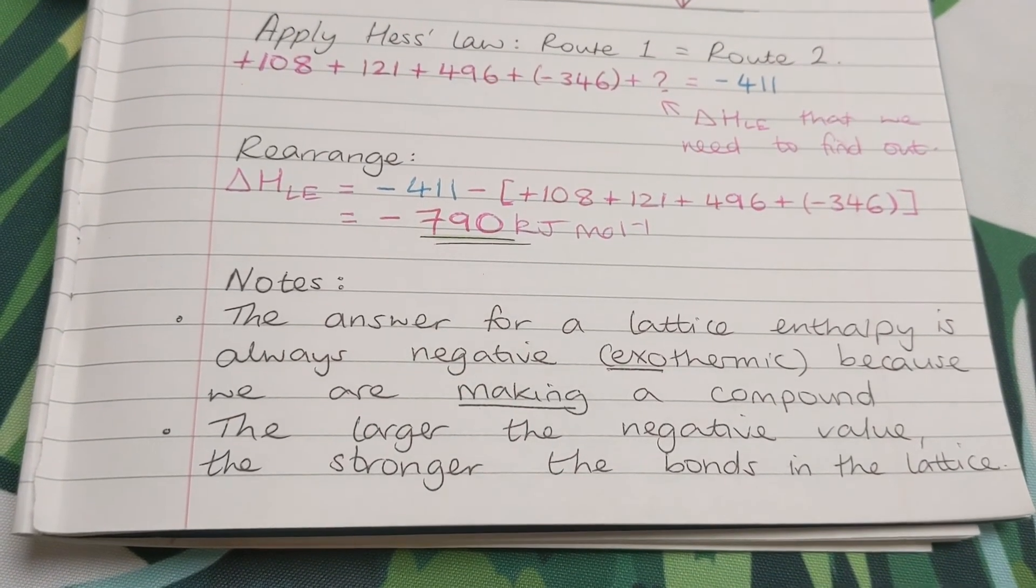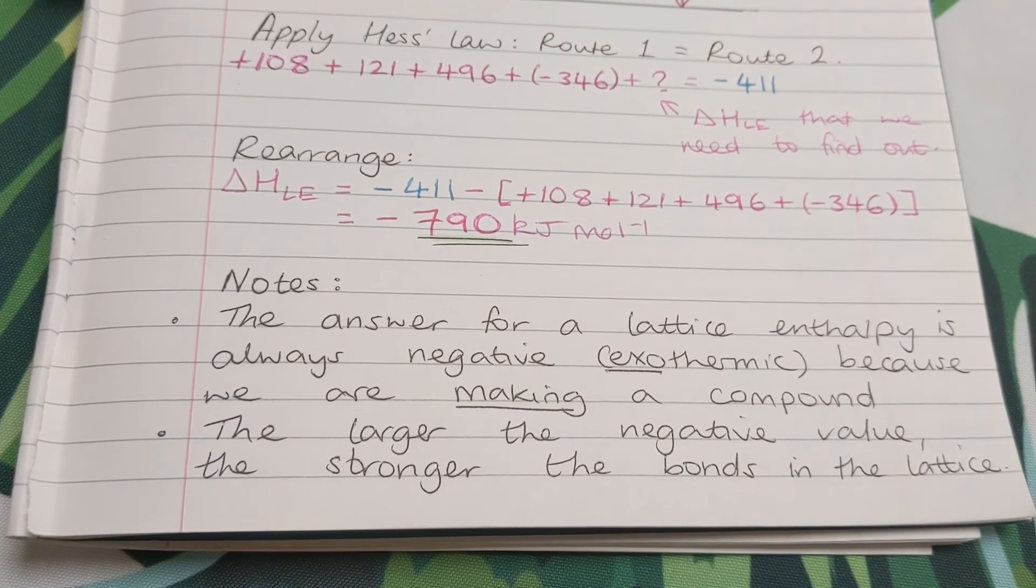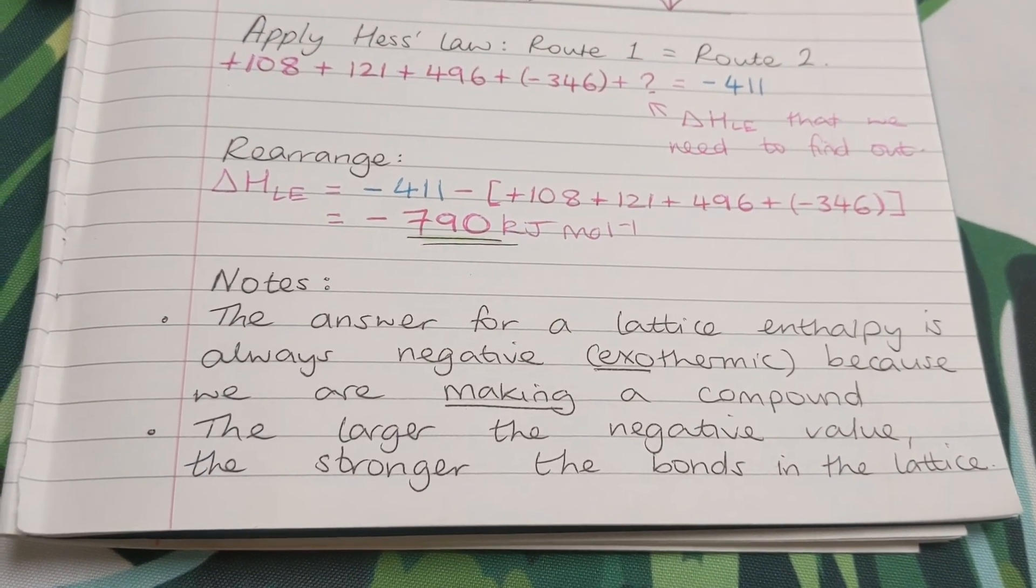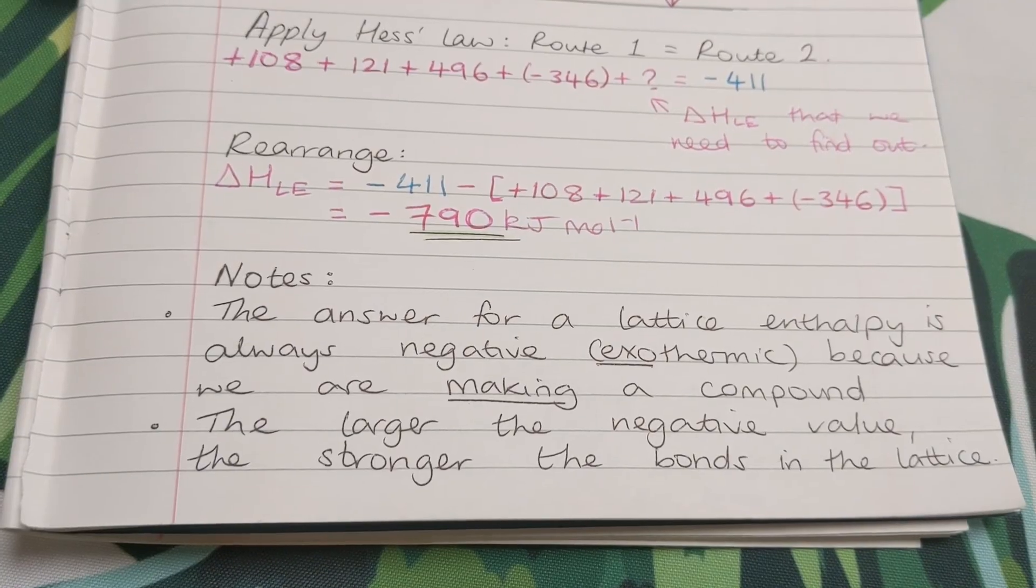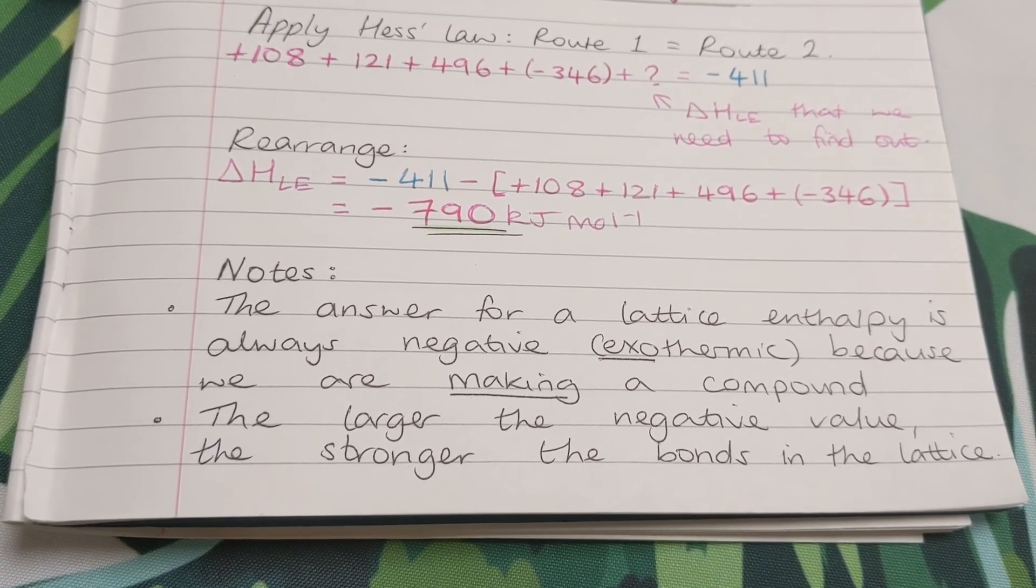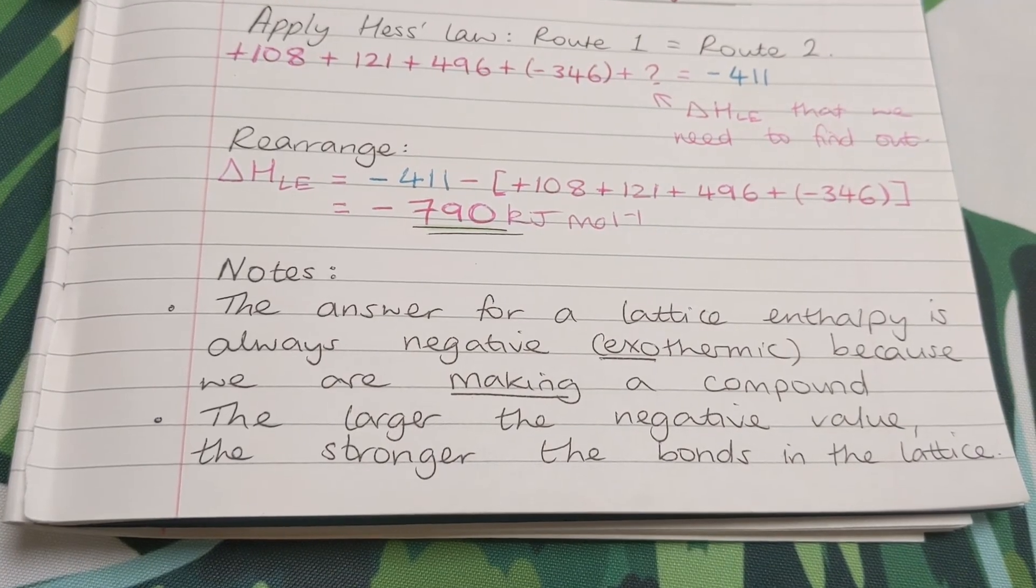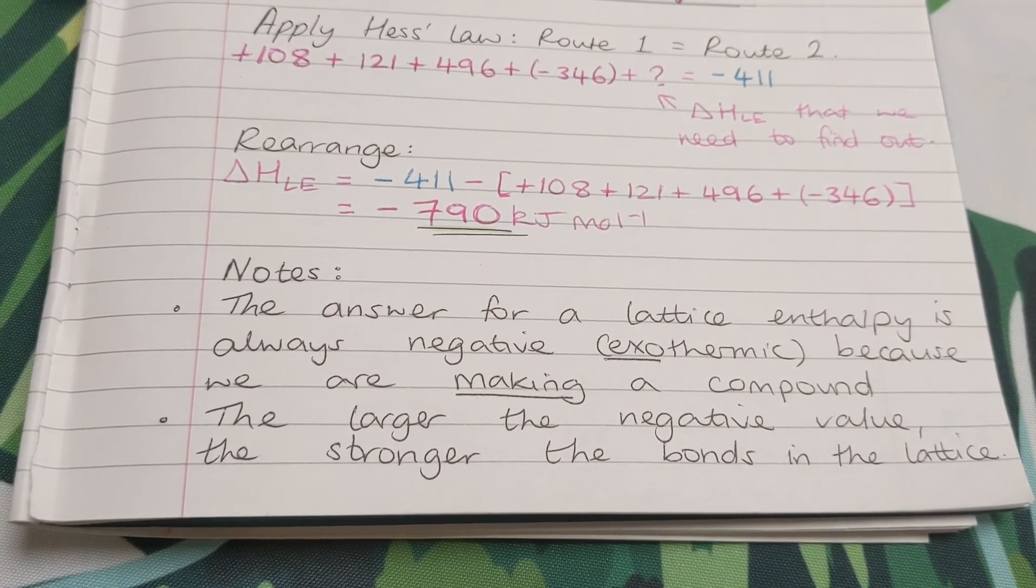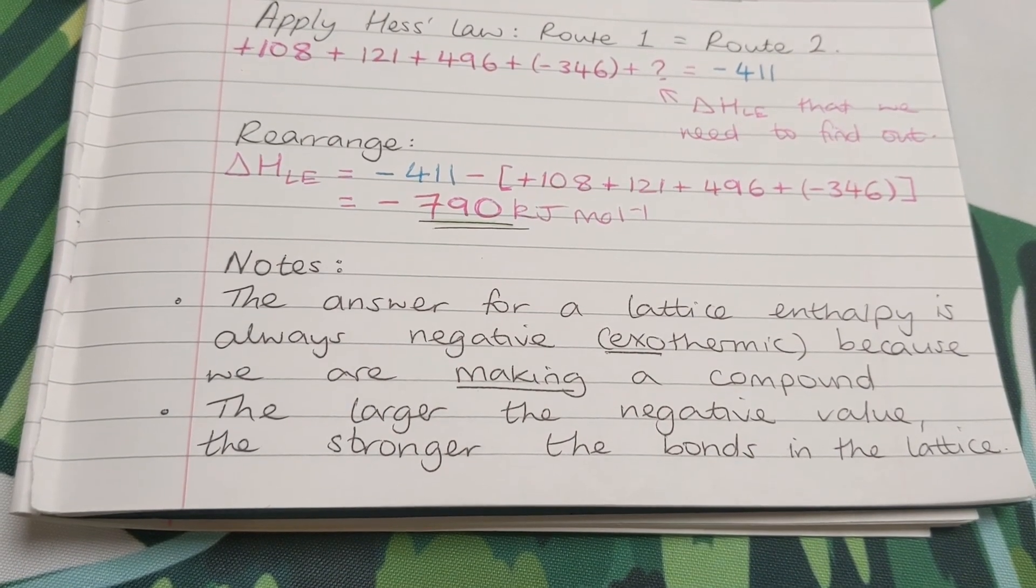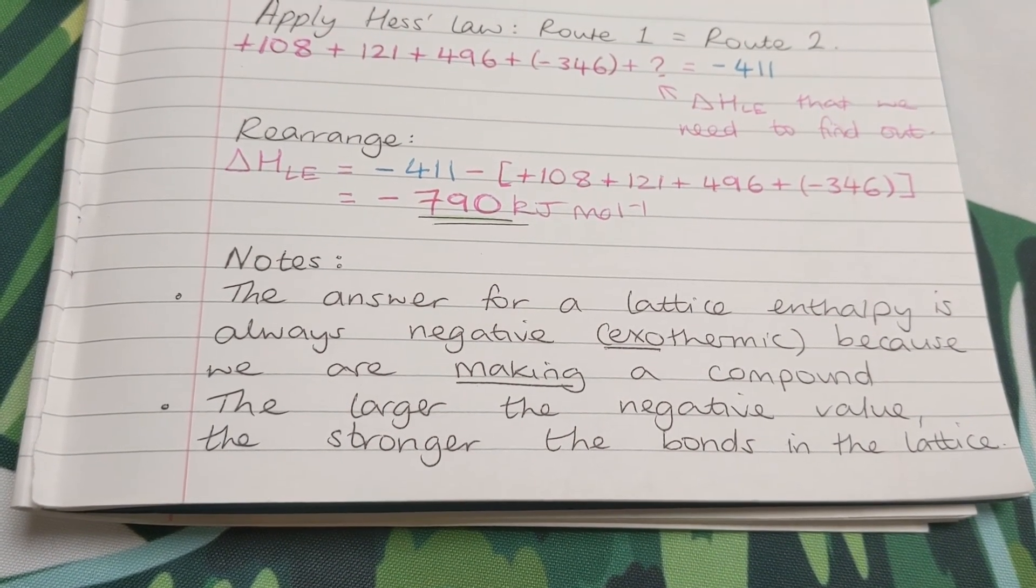Now, the answer when you're calculating lattice enthalpies should always be negative because we're making a compound. And when we make a compound, that change is always exothermic, releases heat. And the bigger the negative number, the stronger the bonds are in the lattice.